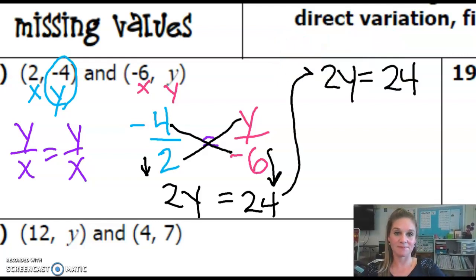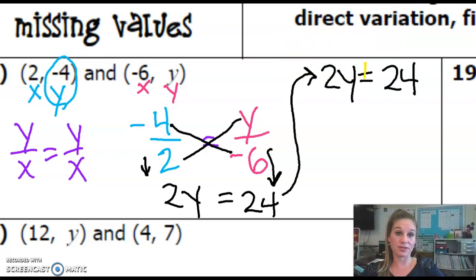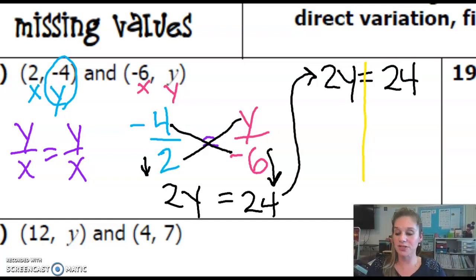So 2Y is equal to 24. This is an equation. We've almost got our variable all by itself, but right now it's being multiplied by 2. So in order to get the Y isolated all by itself, we have to undo that times 2. In order to do that, we would do the inverse operation, and the opposite of multiply by 2 is to divide by 2.